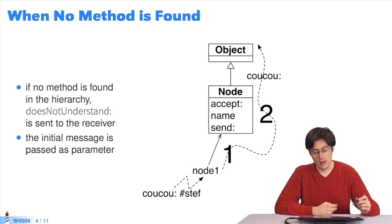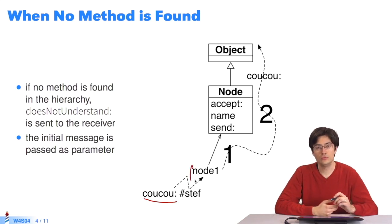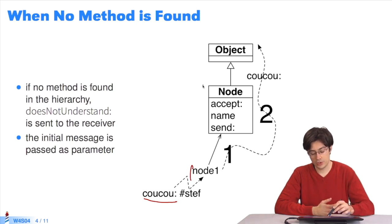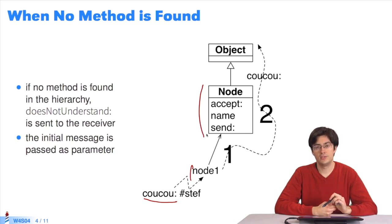What happens in the total absence of a method? What if the lookup fails? Here is an example. A cuckoo message is sent to object Node1. Cuckoo cannot be found in the hierarchy. The cuckoo message is sent to Node1. The algorithm fails to find cuckoo in Node. Next,